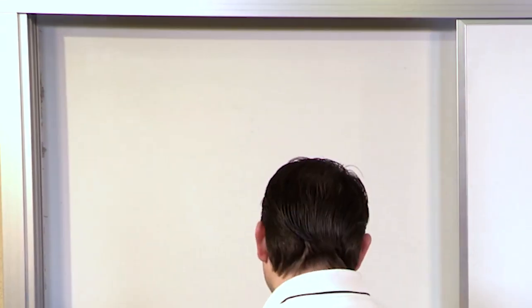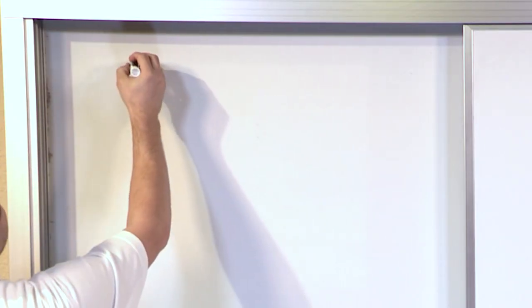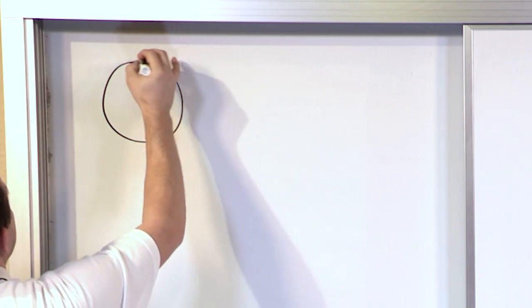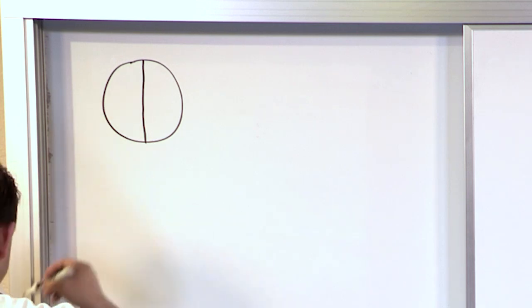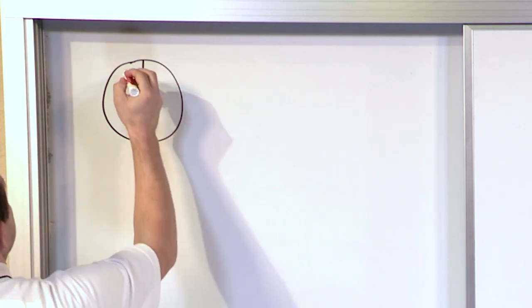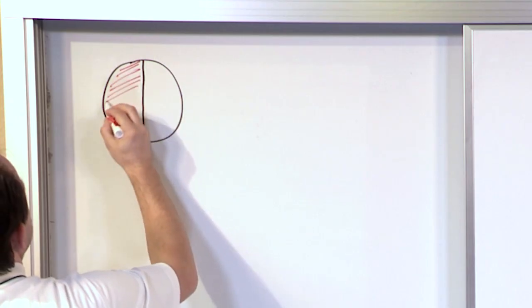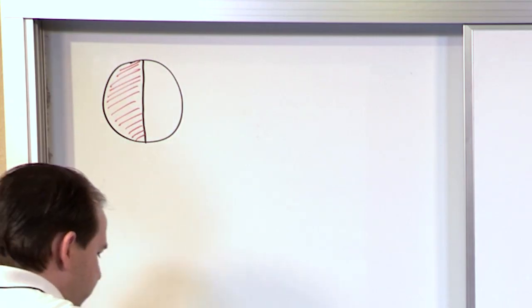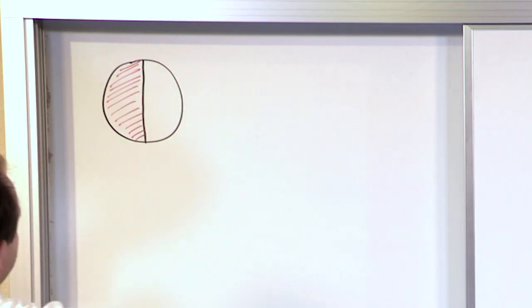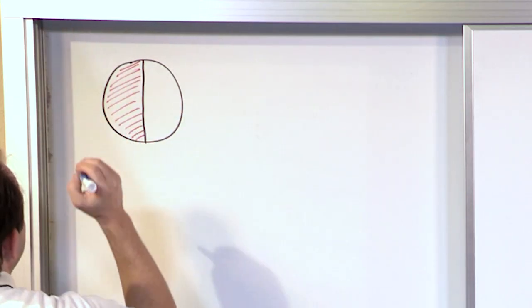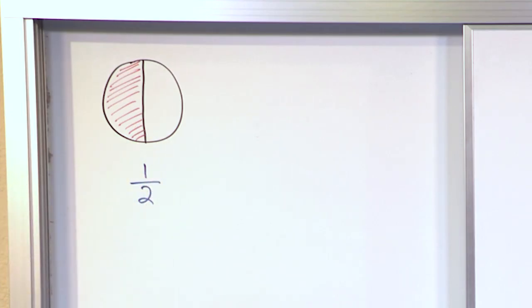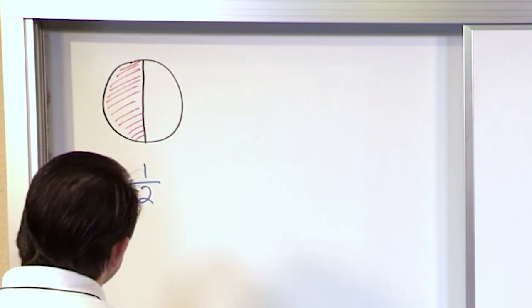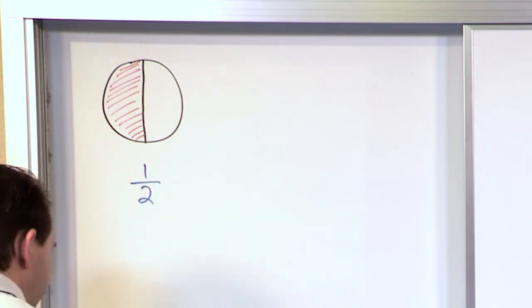Let's do an example to show you exactly what I'm talking about. Let's draw a picture of the most famous fraction of them all. Here's our pie and we've cut it exactly into two pieces. Let me go ahead and shade this piece. If this is the amount of pie that we actually have, what fraction do you think we have? We have two pieces total and I only have one of these two pieces, so this is one half — the most famous fraction of all.